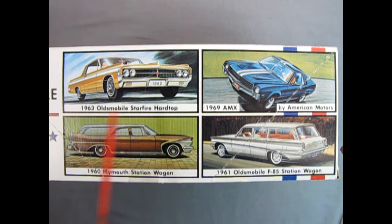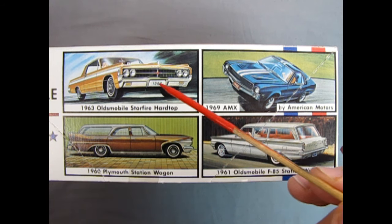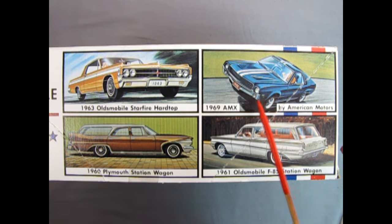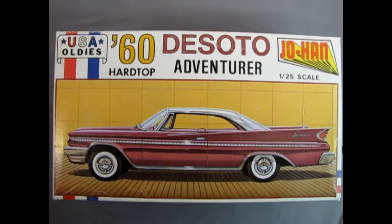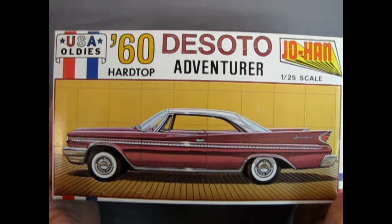On this side of the box we have more available USA Oldies: 1963 Oldsmobile Starfire Hardtop, '69 AMX by American Motors, 1961 Oldsmobile F-85 station wagon. I have unboxed this one as a police version, but here it is in stock, the 1960 Plymouth station wagon, another really cool kit by Johan.